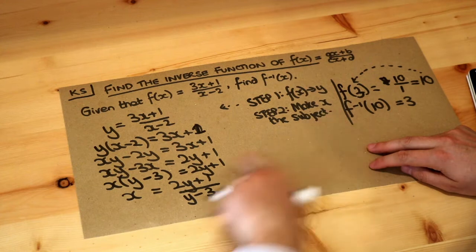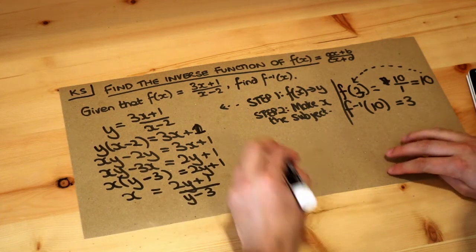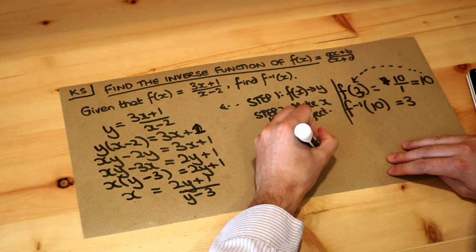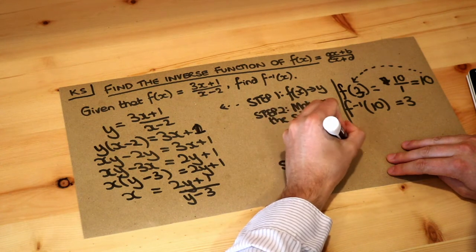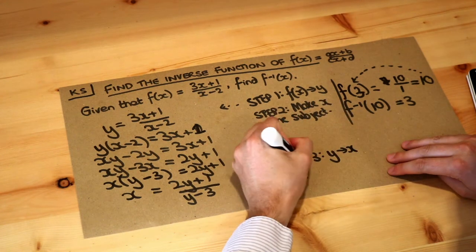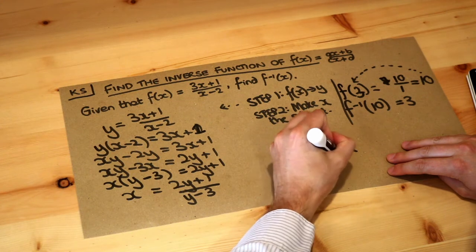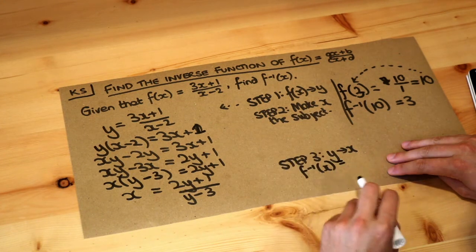So I've now made x the subject, we've got this expression here, and remember the final step is to replace the y's back with x and then just write f minus 1 of x is equal to, because functions are always in terms of x generally.